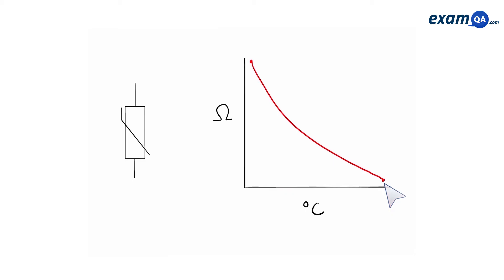A good way to remember this is that when the temperature is low, the electrons are cold and frozen — they don't want to move, so therefore there is high resistance and low current. However, when the temperature begins to increase, the electrons gain kinetic energy and move around faster, so therefore there is lower resistance. Again, this is a good way to help you memorize it.